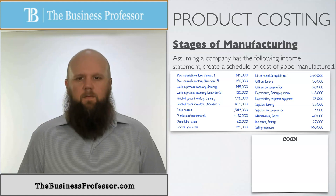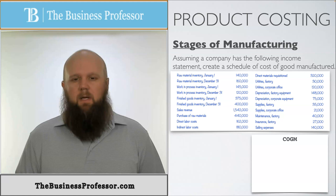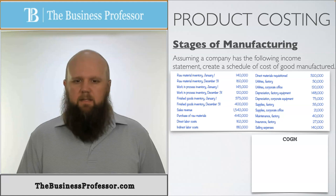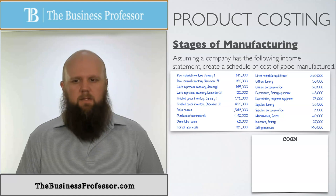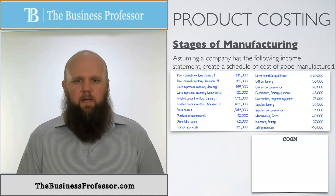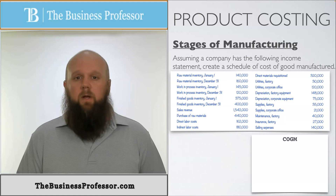Now let's look at an example of product costing cost flow and how we calculate this. The example asks us to assume the company has the following income statement and create a schedule of cost of goods manufactured. In order to do that, we need to understand what goes into the schedule of cost of goods manufactured — what equation do we use.